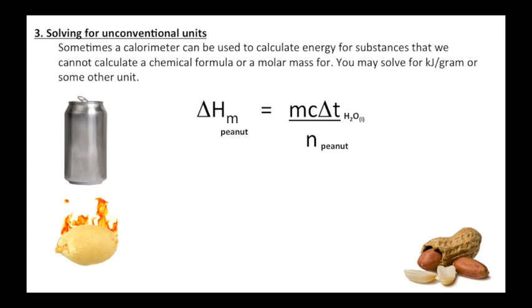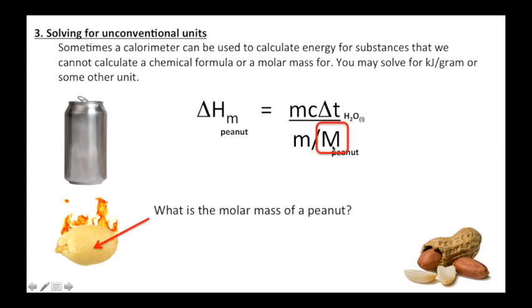Let's say I want to find the molar enthalpy, the delta Hm, the kilojoules per mole for a peanut burning. So my formula would be mc delta T over m mass divided by molar mass. And now we have a problem: what is the molar mass of a peanut? We could plug in our mass of water, we can find that, we can weigh it, plug that in. Temperature change - we can even weigh the peanut, but we don't know the molar mass of a peanut because we don't know the formula for a peanut.